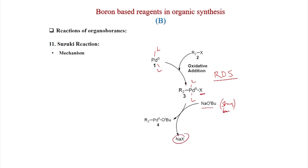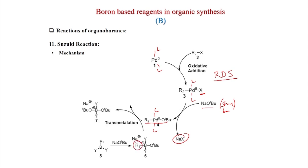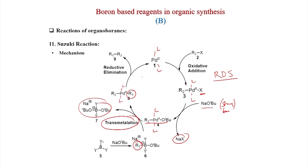In the mechanism, Pd(0) is the active catalyst. First, oxidative addition of R2-X to Pd(0) gives a Pd(II) intermediate — this is the rate-determining step. The strong base displaces X⁻ to give NaX, and tert-butoxide coordinates to Pd. The boronic acid also reacts with sodium tert-butoxide, making boron tetracoordinate with a negative charge, enabling transmetallation — R1 migrates to Pd and O-tert-butoxide goes to boron. Finally, reductive elimination gives Pd(0) and the coupled product R1-R2.